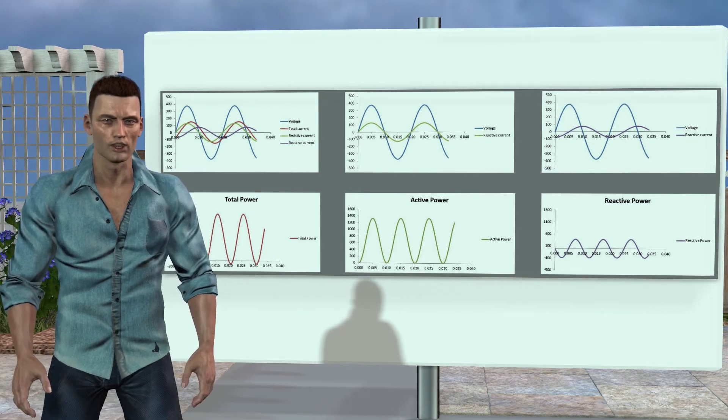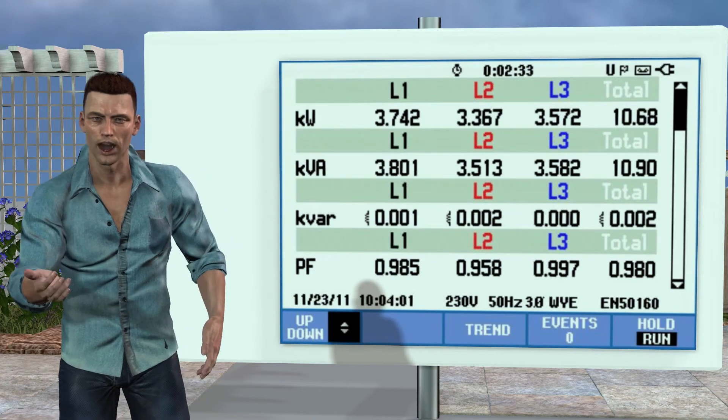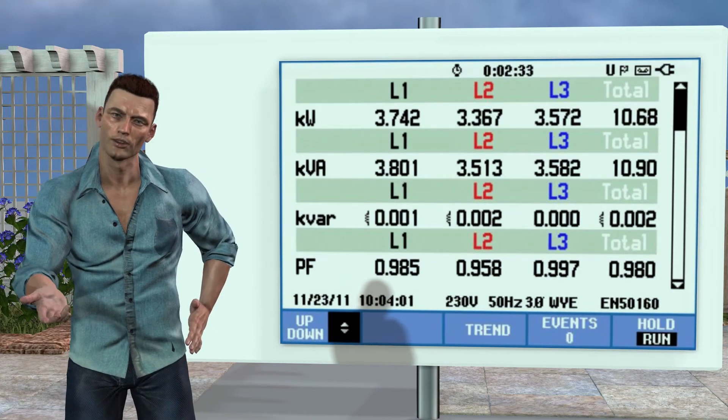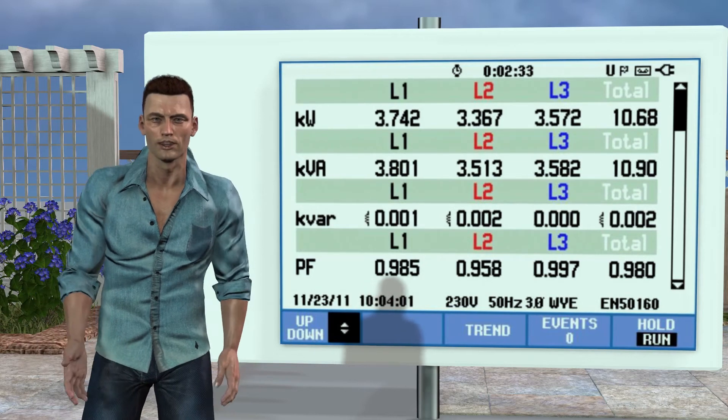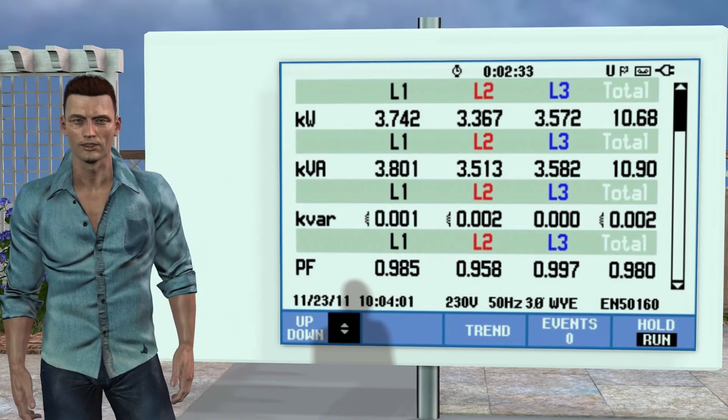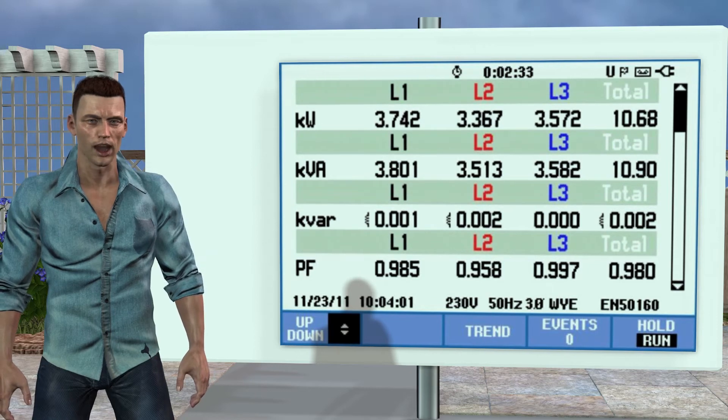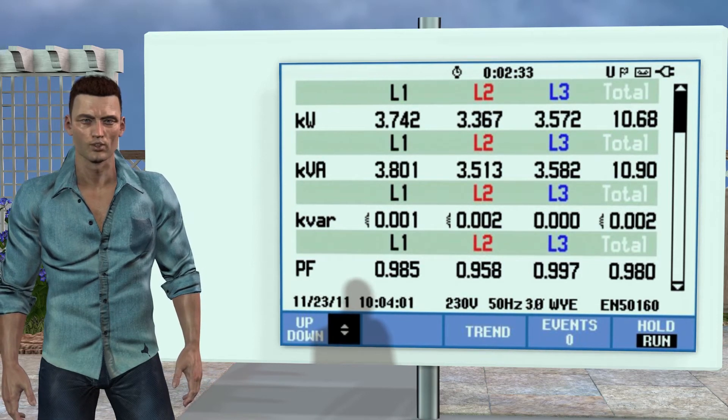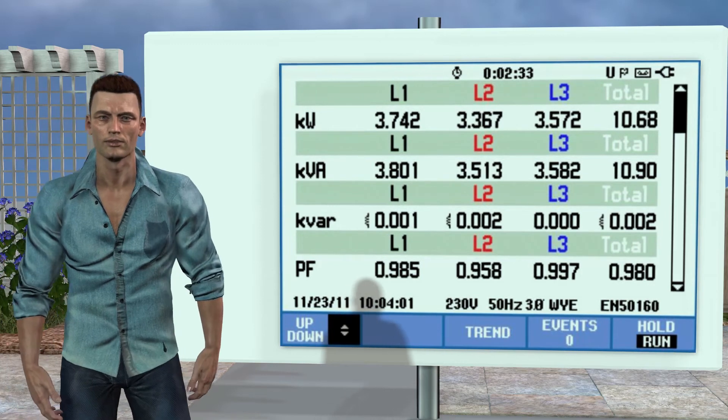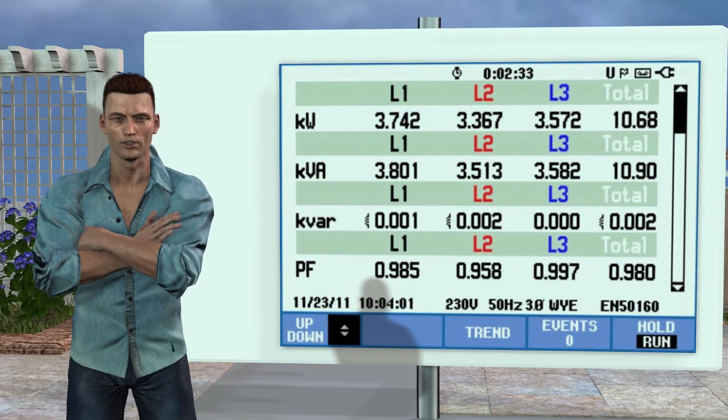However, when we use a power quality analyzer to analyze these powers, to simplify their study and to be able to quantify them, RMS values are used, but in this case, we cannot add them arithmetically, as they are really vectors, and as a consequence, for adding them, we must use a vector sum, considering the phase angle, phi, between voltage and current.